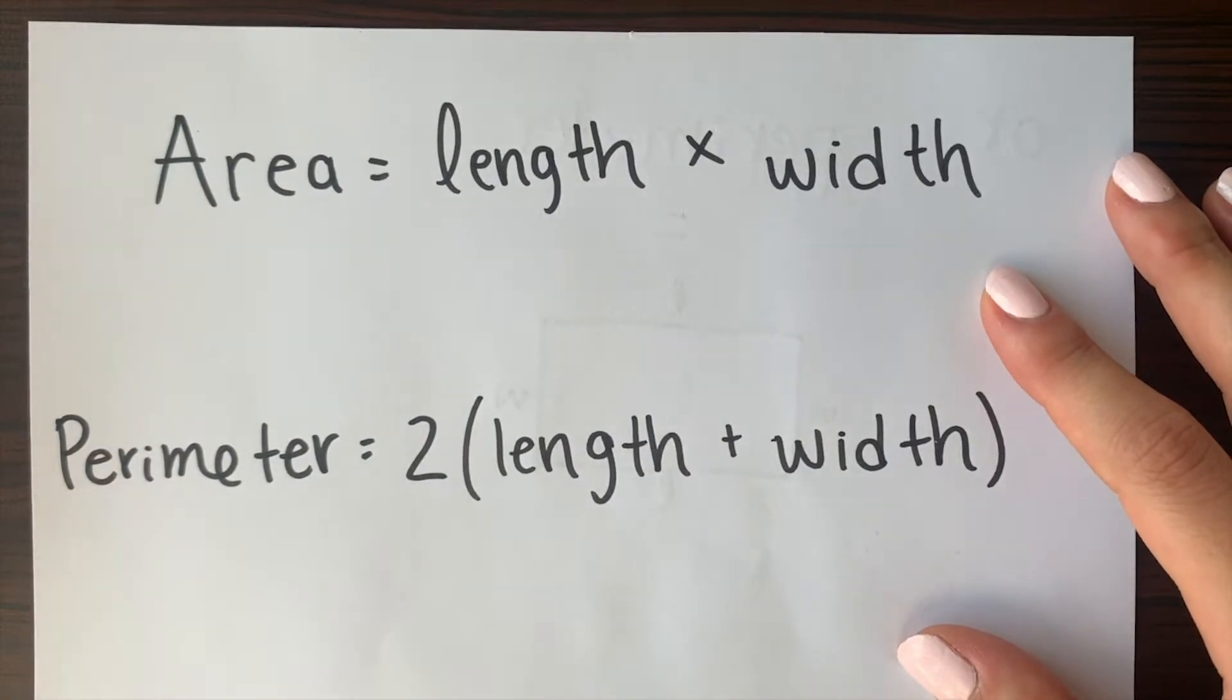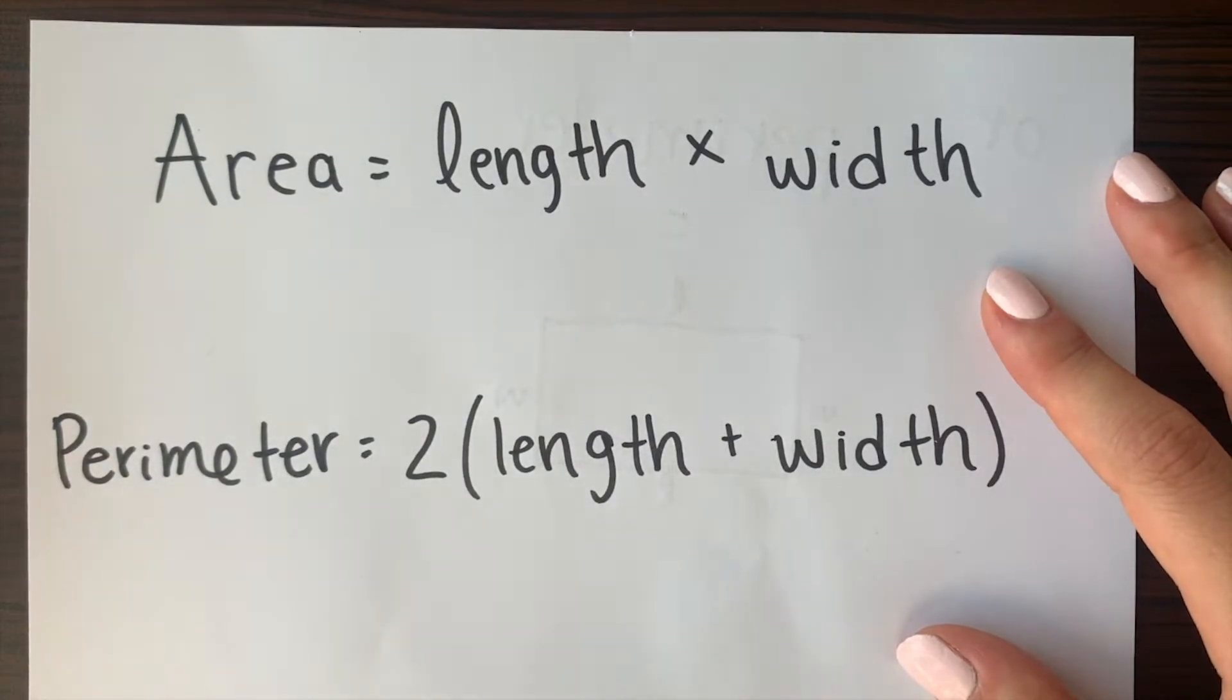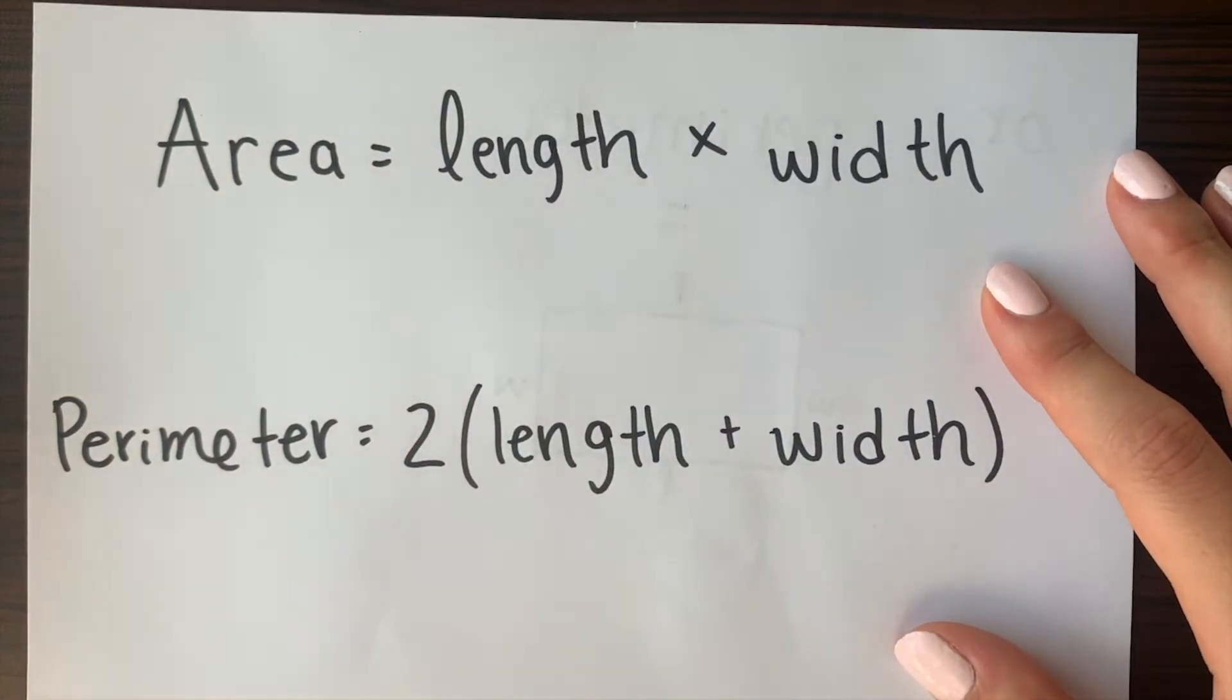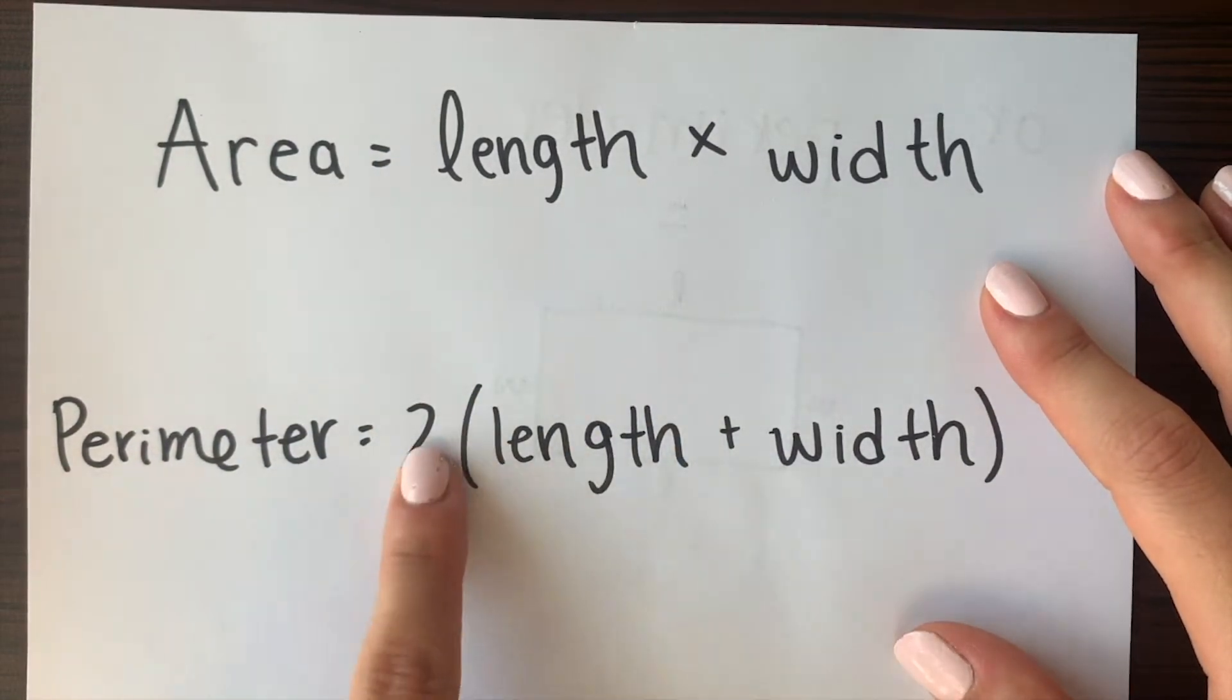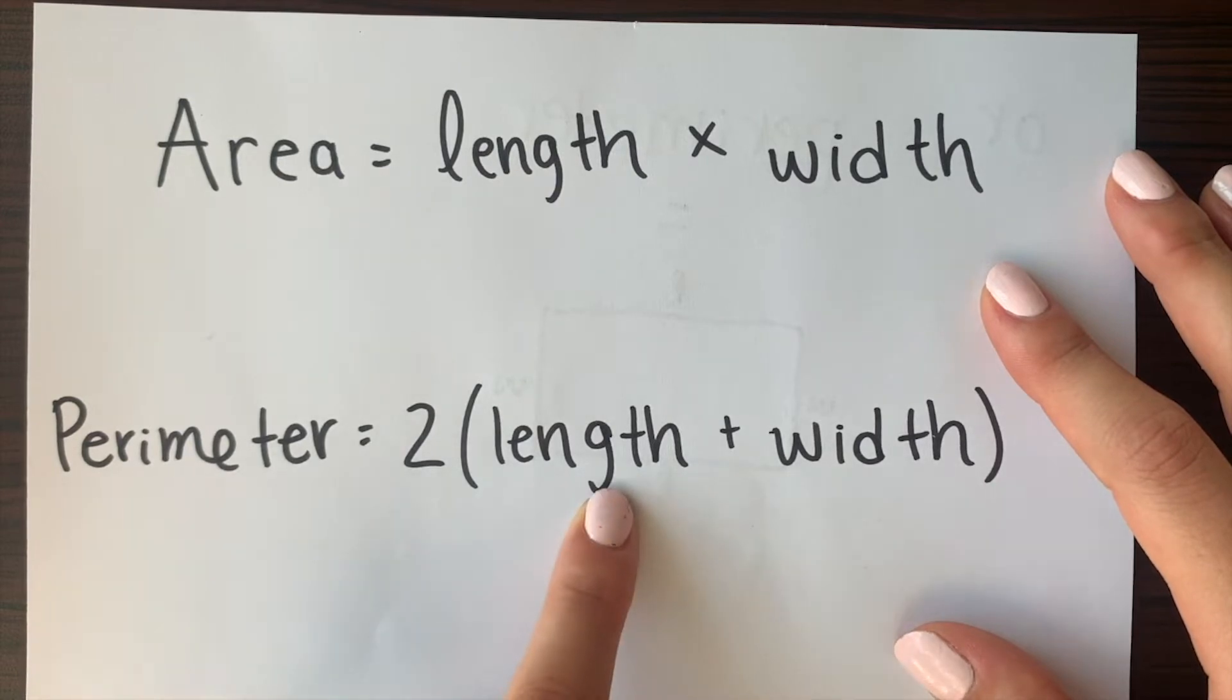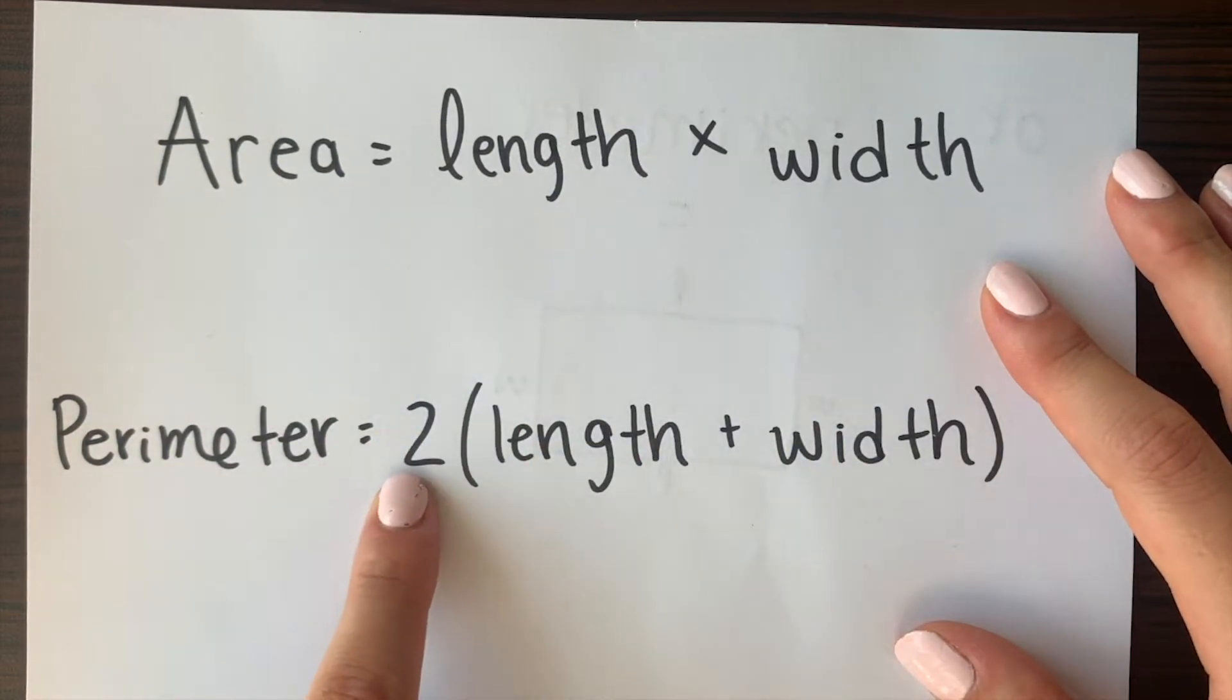And for perimeter it's similar but we're actually going to add here instead of multiplying and we're going to multiply what we get here by adding the length and the width by two.